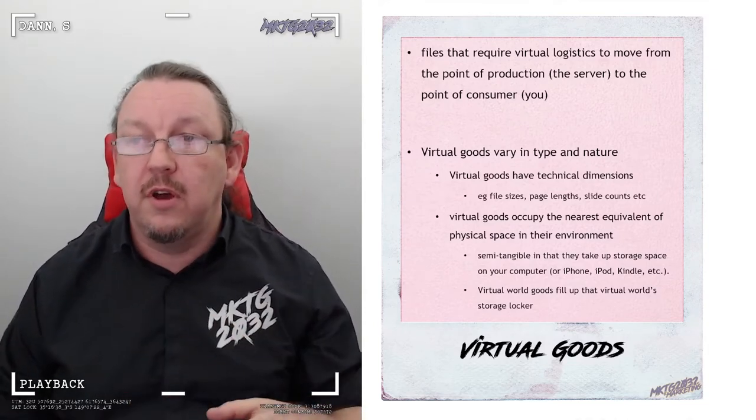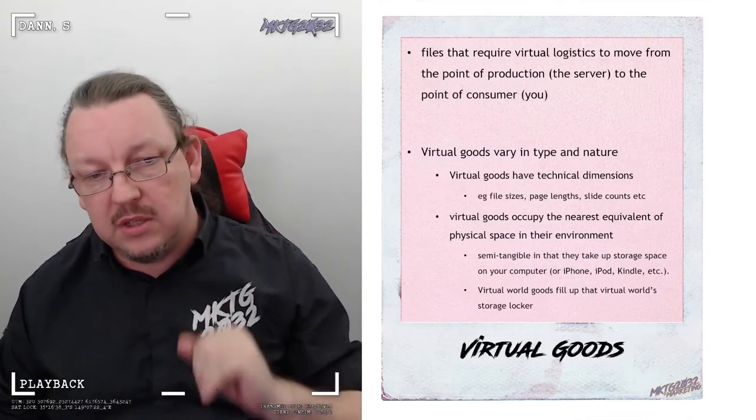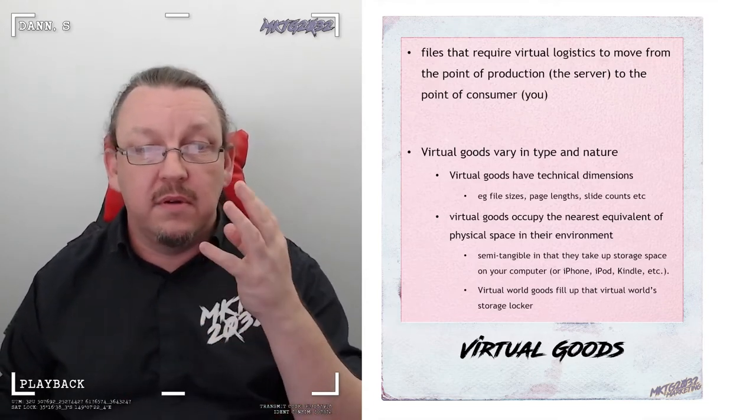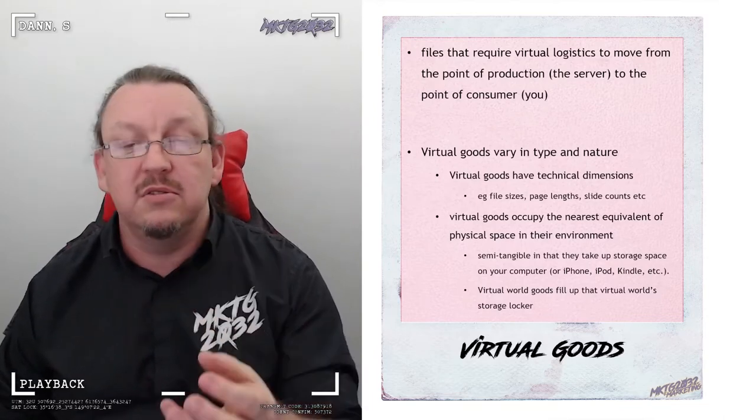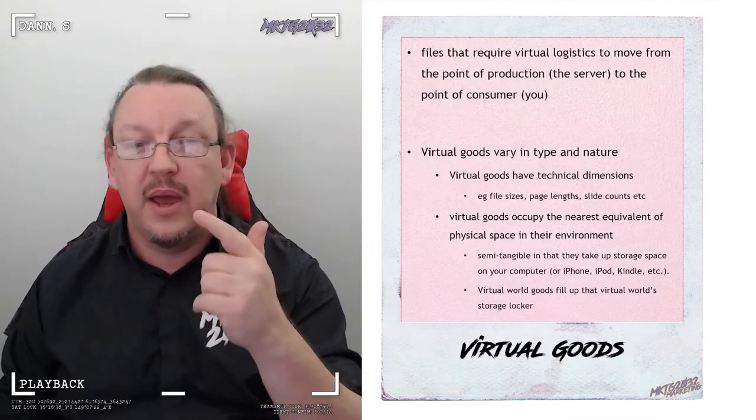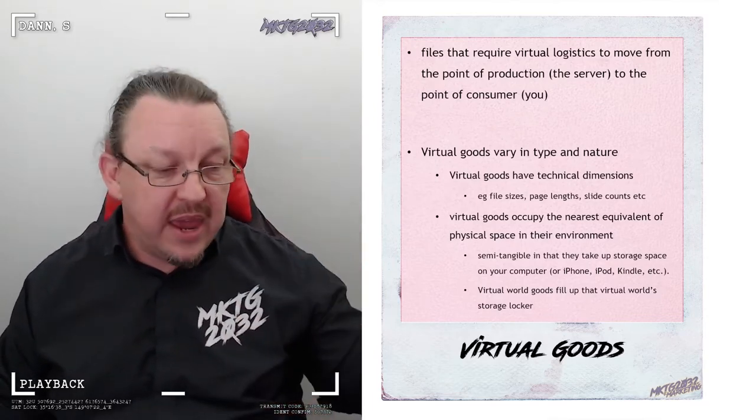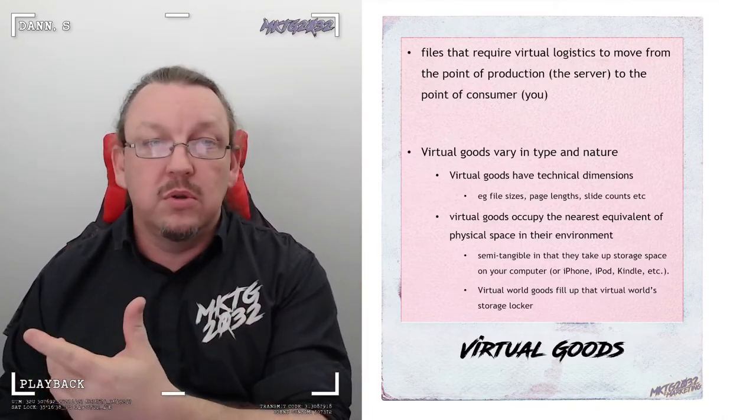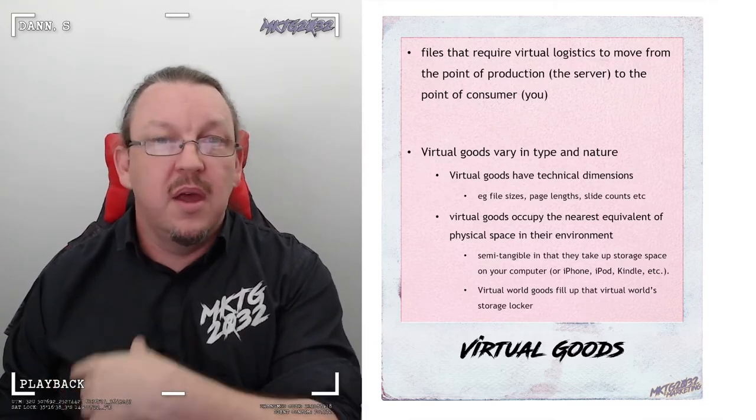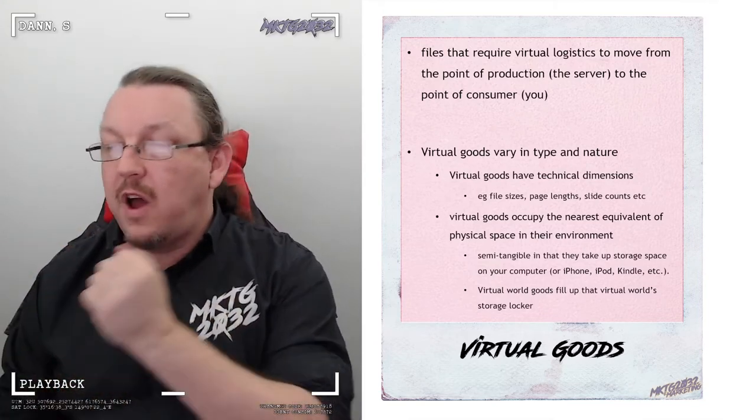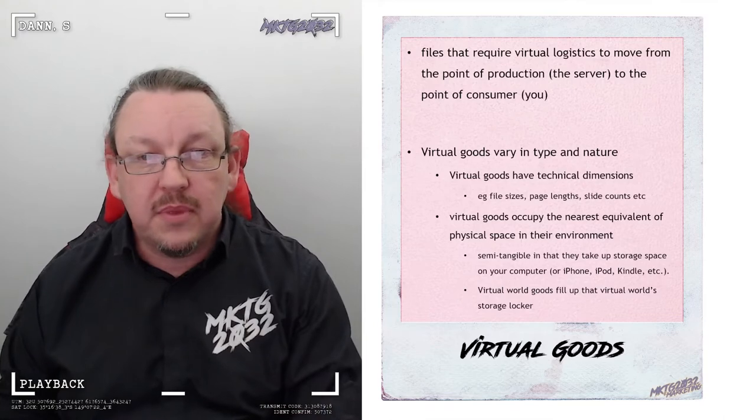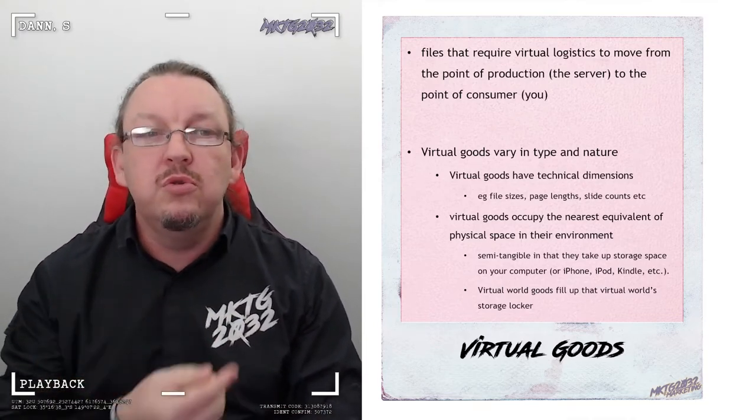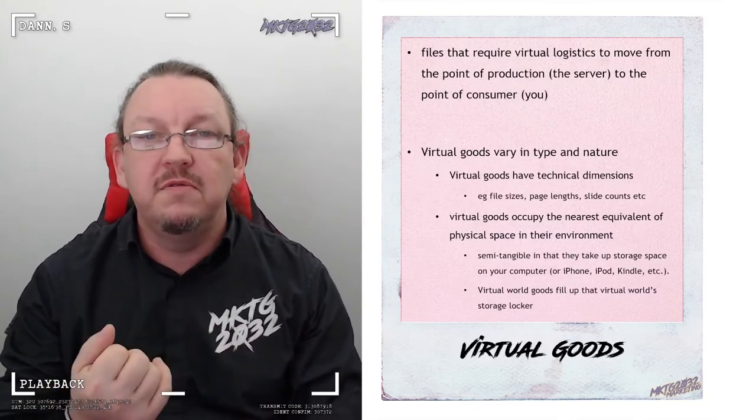So breaking down just a little bit further, briefly, I want to walk you through each of these steps. Virtual goods, functionally, they have what really gives them away is that they have technical dimensions. File sizes, page length, slide counts, they take up space somewhere. So virtual goods fill up a virtual world blocker. Files fill up a hard drive. And there is a set of logistics involved that you've got to download or you've got to do something, some movement of data.